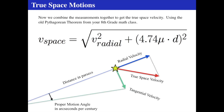To get the true space velocity, you square the tangential velocity, add it to the square of the radial velocity, and take the square root — using the Pythagorean theorem applied to velocity vectors. So the true space velocity v_space equals the square root of v_radial squared plus v_tangential squared. That tells you how fast the star is really going through space and in what direction.